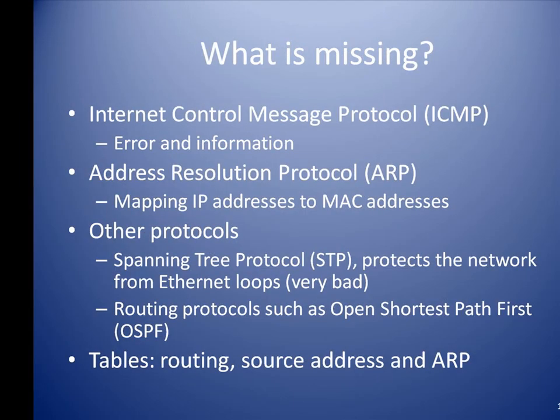A home network is nice because so many operations are handled automatically — the user doesn't actually have to do very much at all. But hidden is a vast collection of protocols, tables, and interactions that must occur before the end user can do anything like email, gaming, or web browsing. Some of these protocols include ICMP and ARP, but there are many others. Much of the information used to make networking decisions is stored in tables such as source address, routing, and ARP. For a network professional, knowledge of these protocols, tables, and their operations is a must.